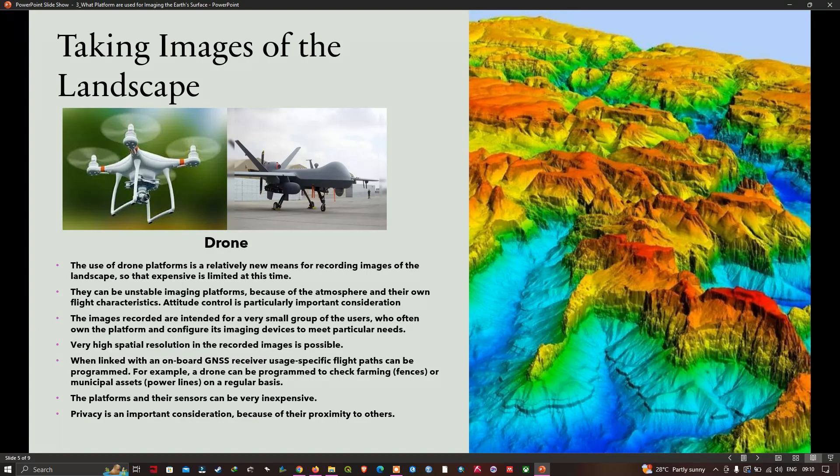It provides very high spatial resolution in the recorded images. When linked with an onboard GNSS receiver, a specific flight path can be programmed. For example, the drone can be programmed to check farming or municipal assets like power lines on a regular basis. The platform and their sensors can be very inexpensive. For drone platforms, privacy is an important consideration because of their proximity to others, particularly in urban regions because of the low flying altitudes.